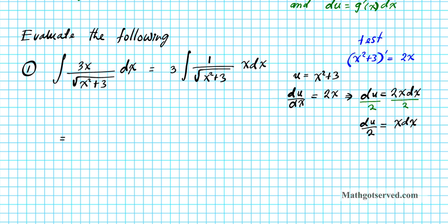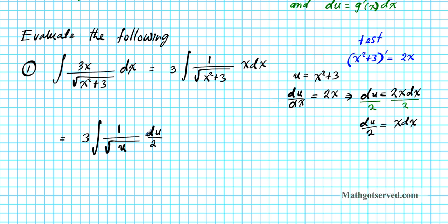Now we're ready to substitute. The integral becomes 3 times the integral of 1 over the square root of u — since x squared plus 3 is now u — times du over 2, since x dx becomes du over 2. When using u-substitution, two substitutions happen: the inner function gets substituted and the other function gets substituted as well. This is a much easier integral to evaluate.